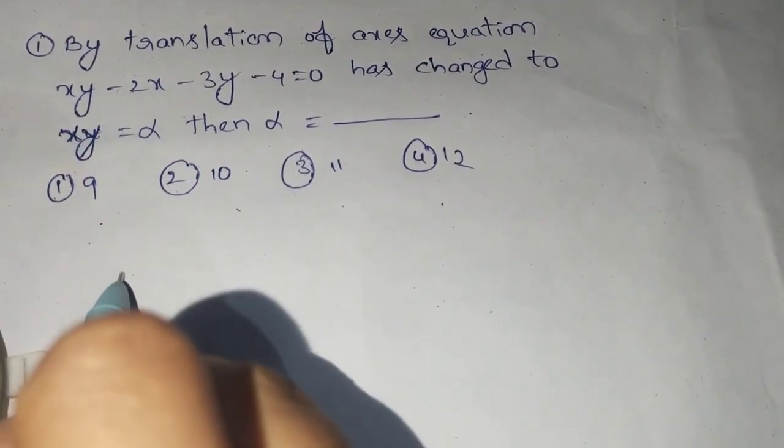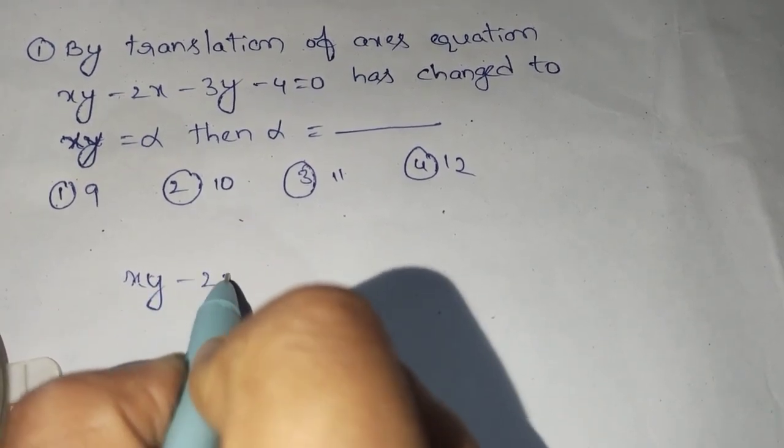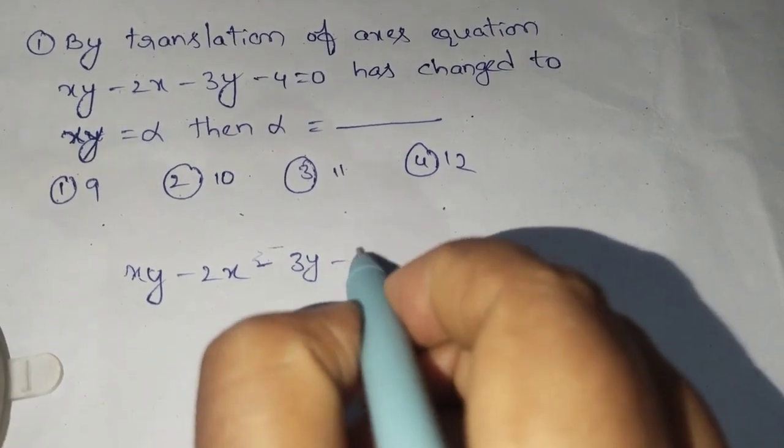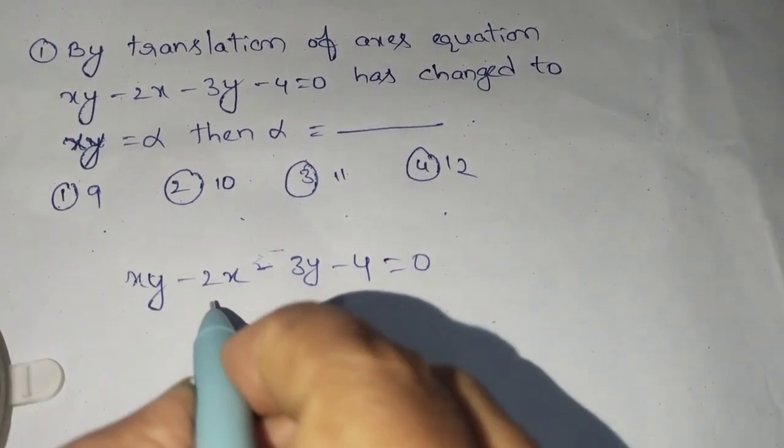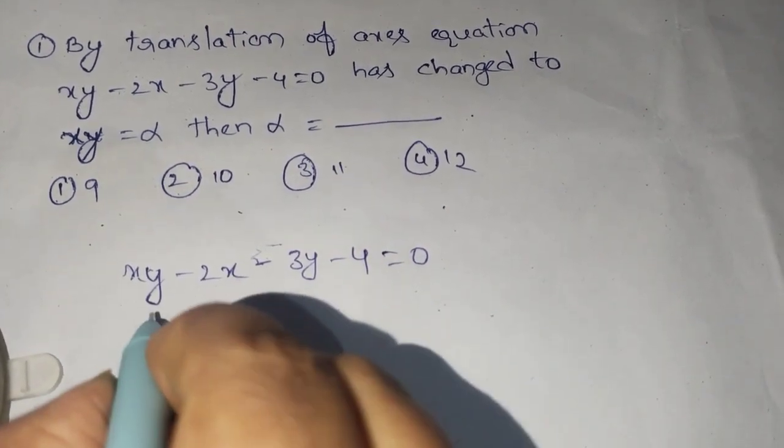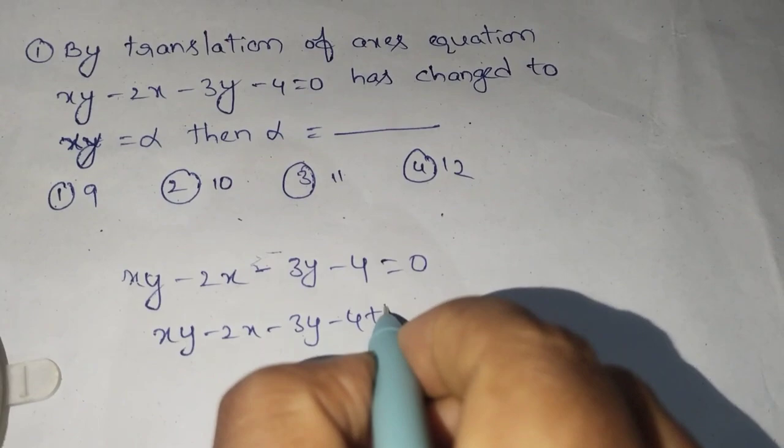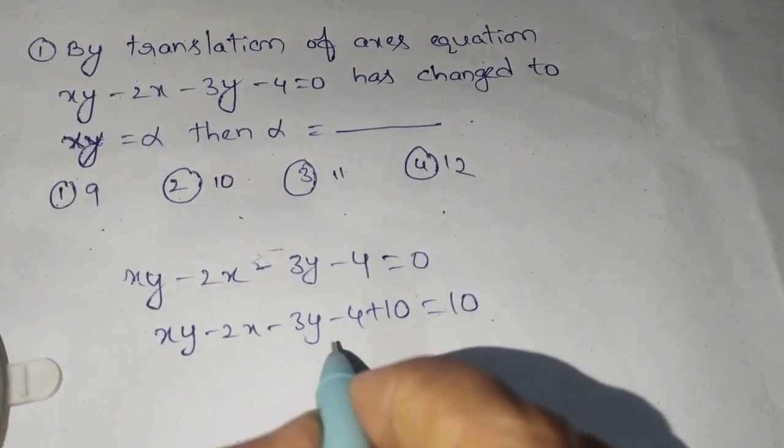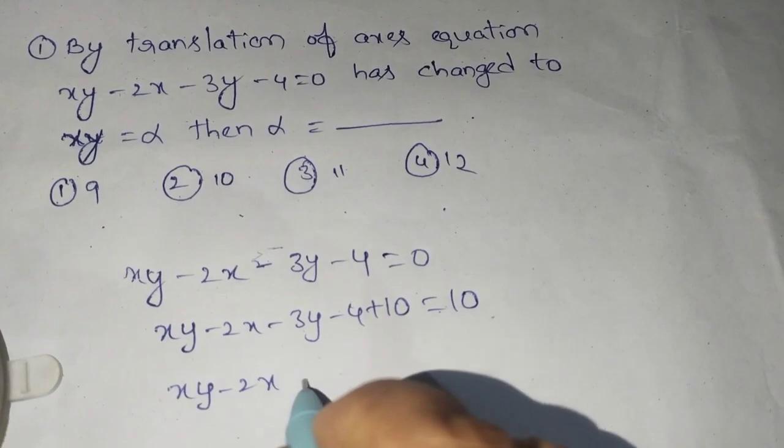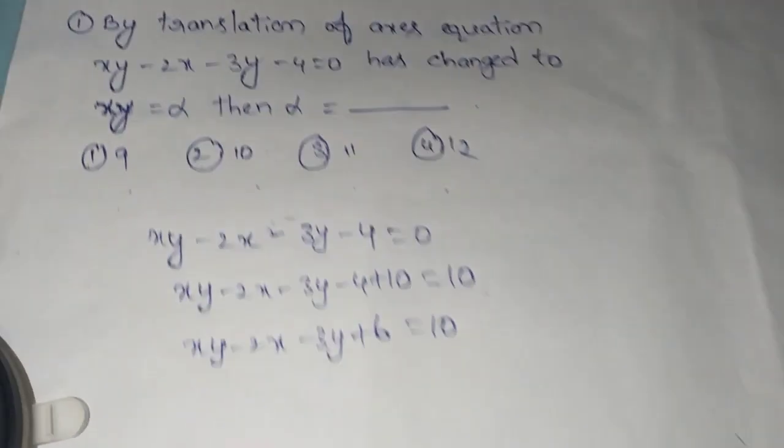Now see the given equation xy minus 2x minus 3y minus 4 equals 0. So if I add plus 10 on both sides, the constant will become plus 6. Now take the common here.